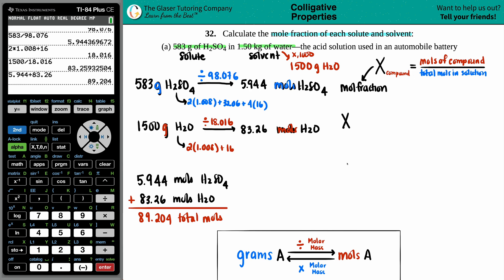We'll do a mole fraction, two of them. For the first one, we have the moles of H2SO4. The total moles for H2SO4, the moles of the compound, is 5.944 divided by the total moles, that's 89.204. Then when it comes to the water, if we wanted to find the mole fraction of the water, it's those moles, 83.26 divided by the total, which is 89.204.